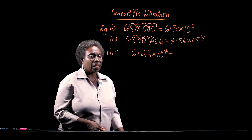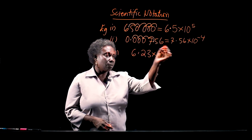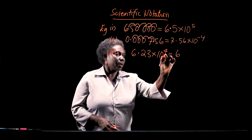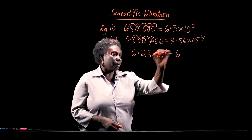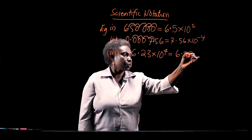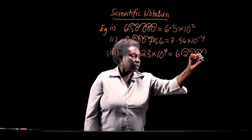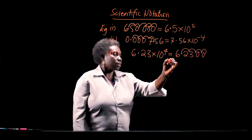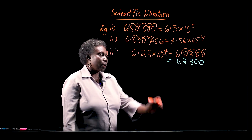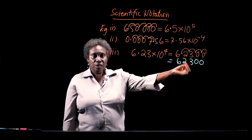If the power of 10 is a positive number, we are going to move the decimal point to the right, and we count the number of places we move to the right, and we stop where the power of 10 stops. So we have 6.23 times 10 to the power of 4. We move 4 places to the right: 1, 2, 3, 4. Where the gaps are, I fill them up with a zero. So my answer is 62,300. So 6.23 times 10 to the power of 4, as an ordinary number, is 62,300.